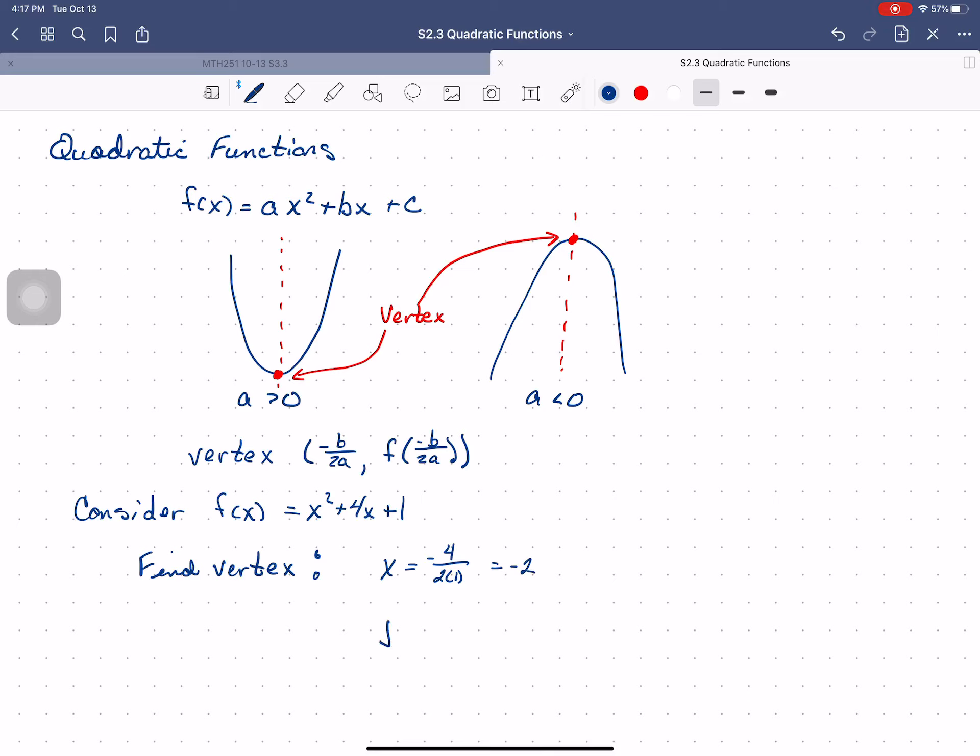And we know that the y-coordinate of the vertex is at f(-2), which is (-2)² + 4×(-2) + 1. So that's 4 - 8 is -4, plus 1 is -3. So my vertex is at the coordinates (-2, -3), which is exactly what Desmos told me.